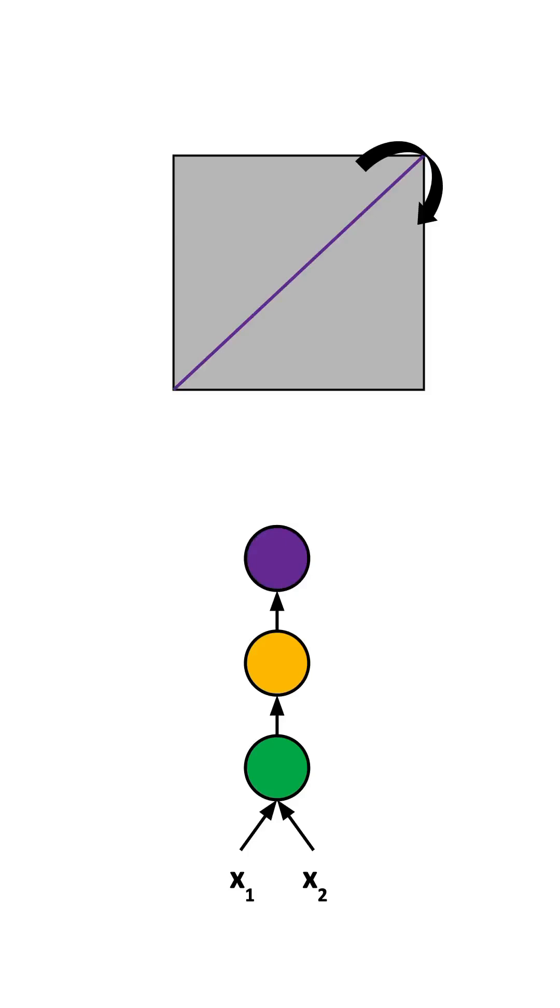Then, the second neuron folds this space again, creating a new output space. Finally, we can introduce a third neuron that yet again folds the space.